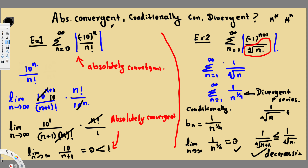So we found that the absolute value series is divergent, but when we do the alternating series test it is convergent. The series is not absolutely convergent but it is conditionally convergent. That's how we do this kind of problem. I hope you guys find this video helpful — see you next time.